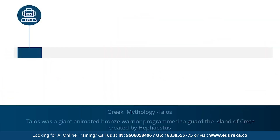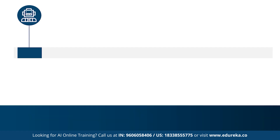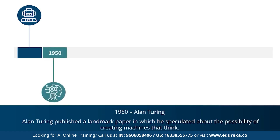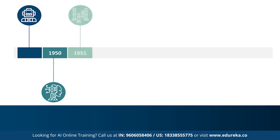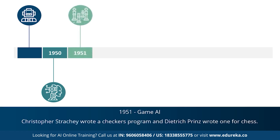The concept of AI goes back to the classical ages. Under Greek mythology, the concept of machines and mechanical men were well thought of. An example is Talos — a giant animated bronze warrior who was supposedly programmed to guard the island of Crete. In 1950, Alan Turing proposed the Turing test, which determines whether or not a computer can intelligently think like a human being. The Turing test was the first serious proposal in the philosophy of artificial intelligence. 1951 marked the era for game AI, when computer scientists developed programs for checkers and chess.